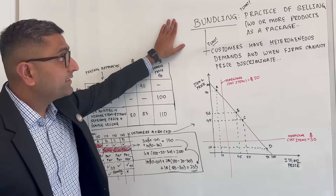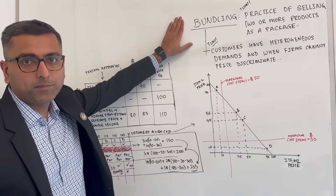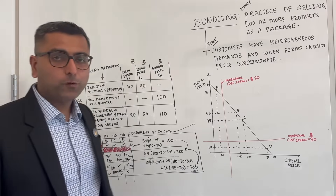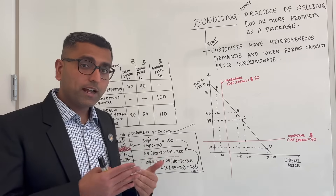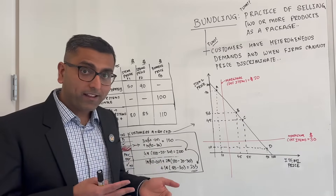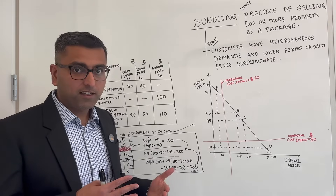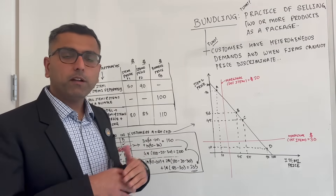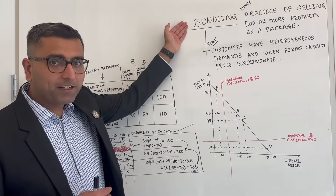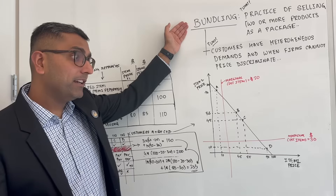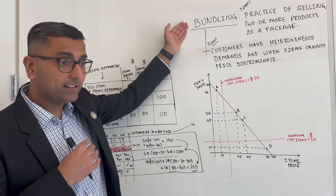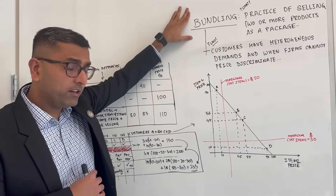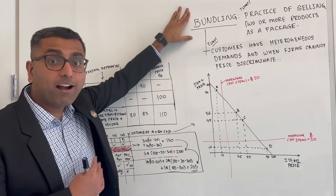Bundling is a process of selling two or more items as a package. Have you been to a restaurant where they give you options to order food either a la carte — you can individually order items — or you can order a buffet or a full dish? When they give you a buffet where you can eat whatever you want, that is a form of bundling. They are bundling the dessert, the main dish, and the starters all together in one package.